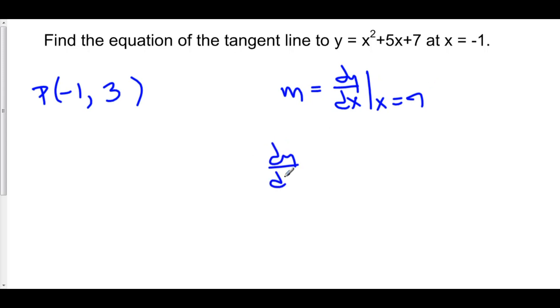dy over dx is equal to 2x plus 5 in this particular case. And at x equals negative 1, 2 times negative 1 is negative 2, plus 5 is 3.